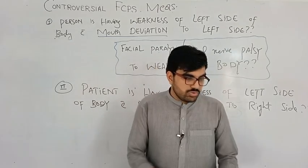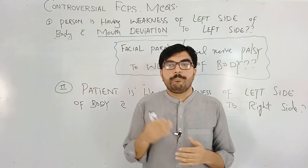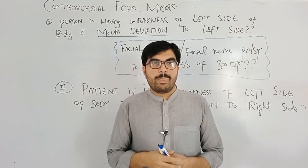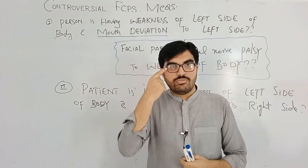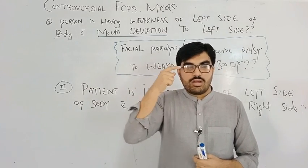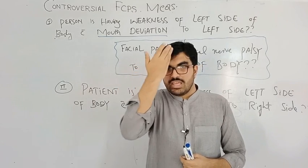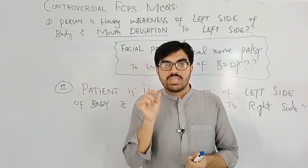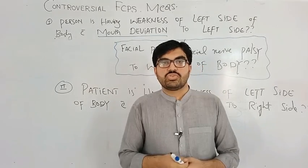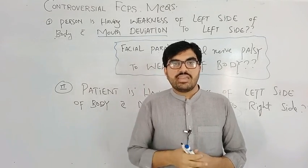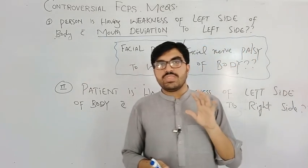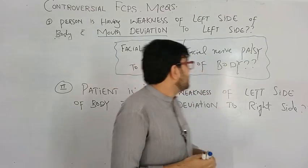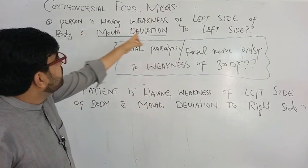If the mouth is deviated to the left, the right facial nerve is paralyzed. If deviated to the right, the left facial nerve is paralyzed. Regarding upper vs. lower motor neuron: if there is eye involvement or loss of forehead wrinkling, the whole face is affected, indicating lower motor neuron (peripheral) facial nerve palsy originating from the pontine region.